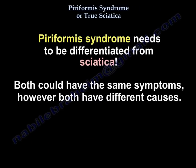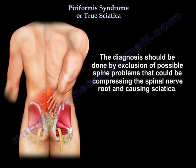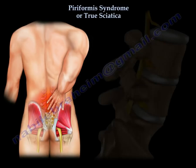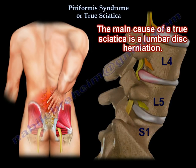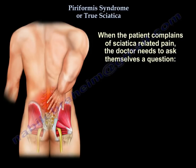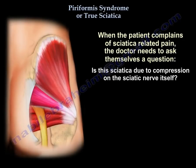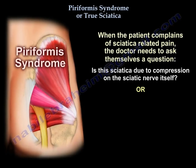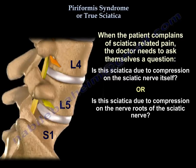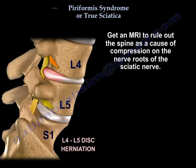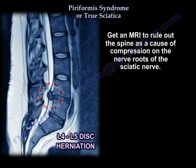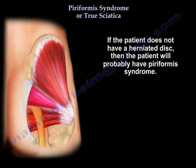Piriformis syndrome needs to be differentiated from true sciatica. Both can have the same symptoms but have different causes. The diagnosis should be made by exclusion of a spine problem that compresses the spinal nerve root and causes sciatica. The main cause of true sciatica is disc herniation. When a patient complains of sciatica, the doctor needs to ask: is this due to compression on the sciatic nerve itself, or compression on the nerve roots? An MRI is obtained to rule out spine compression on the nerve roots, and if no herniated disc is found, the patient likely has piriformis syndrome.